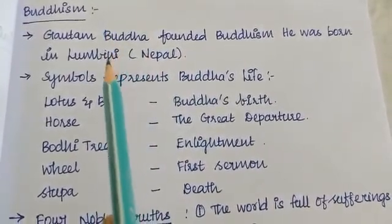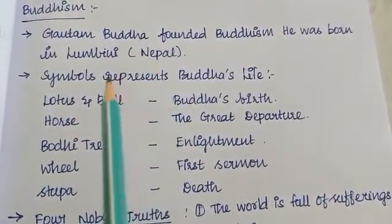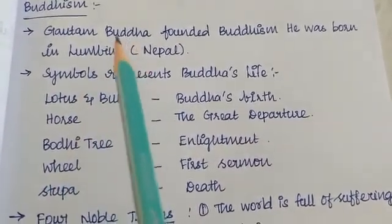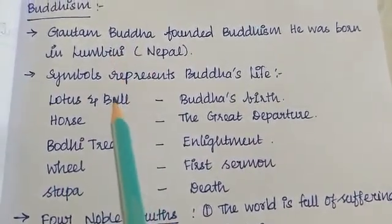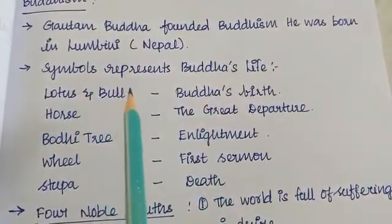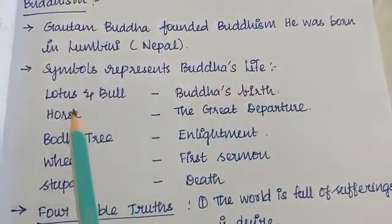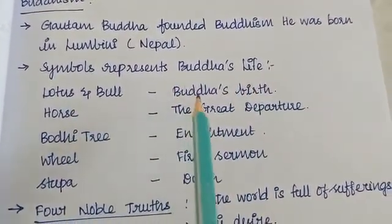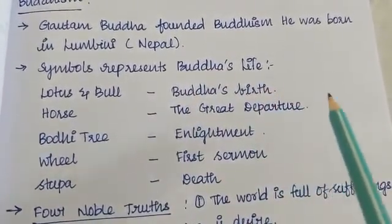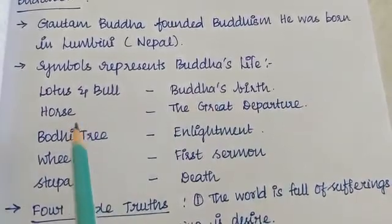Buddha's life is represented by symbols. What symbols do you see? Buddha is called Lotus and Wheel. The birth of Buddha is represented by birth symbols. Buddha is represented by Moksha. It is also represented by horse symbols.